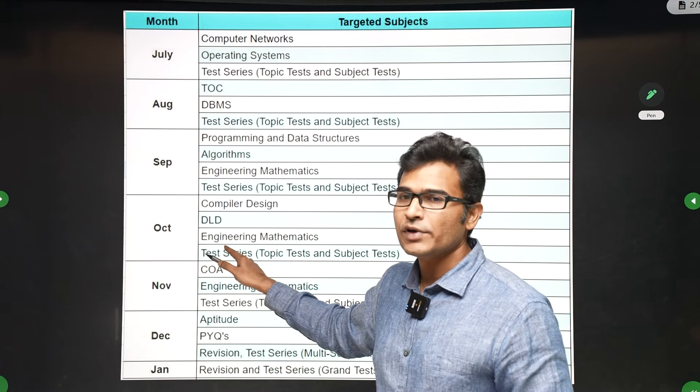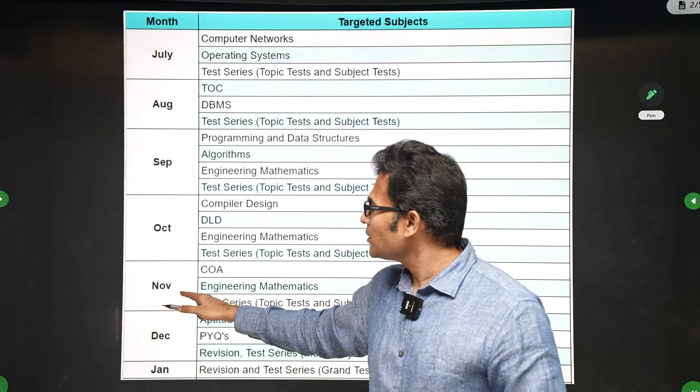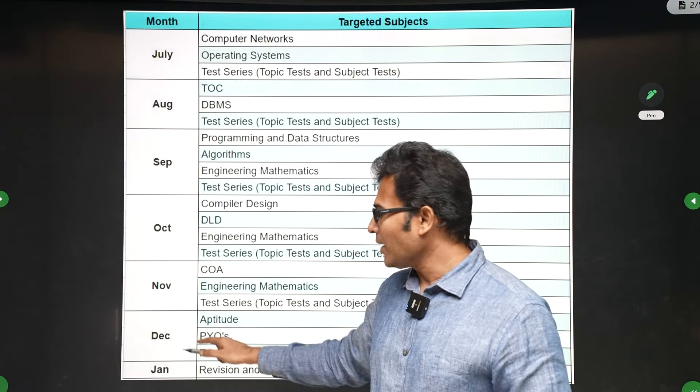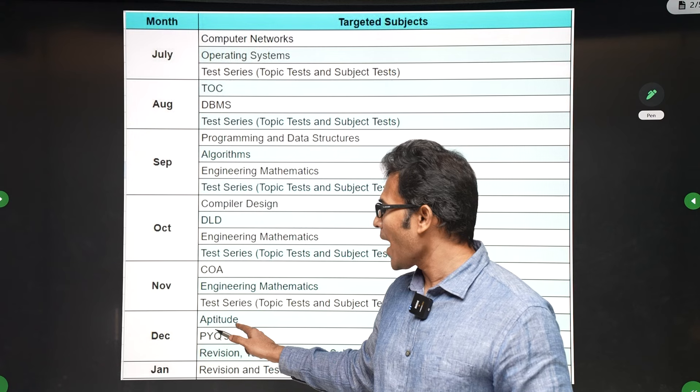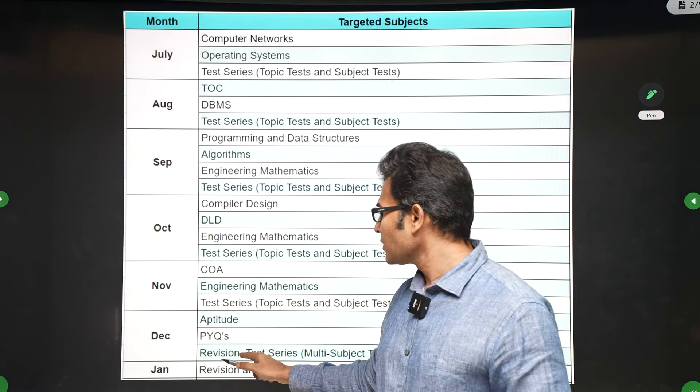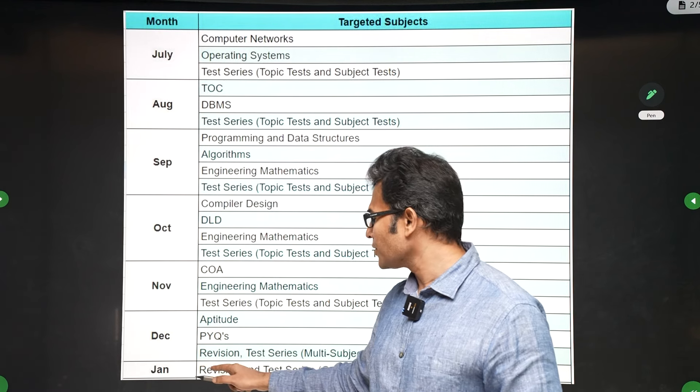Then in November, you do Computer Organization and Engineering Mathematics and a part of test series. Then in December, you can do Aptitude and PYQs, and then you can start revision and test series (multi-test series). Finally, in the January month, you can do revision test series, which are grand test series.